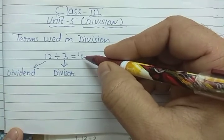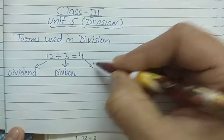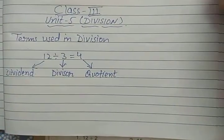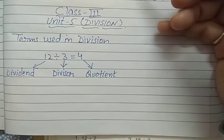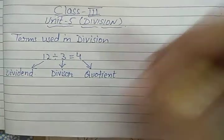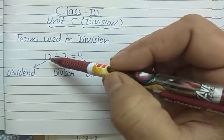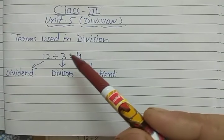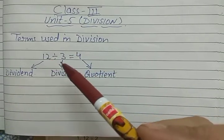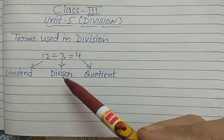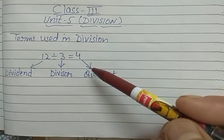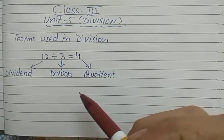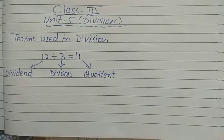The result — or you can say the answer — is 4, so this 4 is our quotient. These are the three terms used in division: the number to be divided is called the dividend, the number which divides is called the divisor, and the answer is called the quotient.